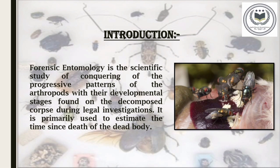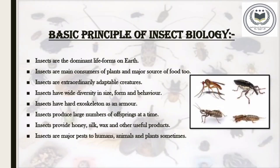We are going to see estimation of time since death later in this video. For a better understanding of forensic entomology, we need to learn about some basic principles of insect biology. Insects are the dominant life form on earth. About 1 million species have been described and there may be as many as 10 times that many yet to be identified. Millions may exist in a single acre of land. The only place where insects are not commonly found is the oceans.